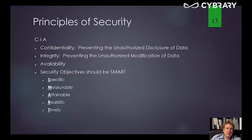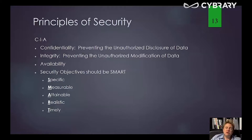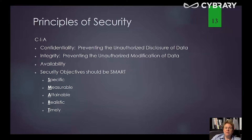When we talk about our objectives being measurable, there needs to be a way of verifying steps along the way and verifying when we've obtained those goals. So we want to decrease malware infestations as detected by our antivirus software — a decrease of 5%, something like that. So it's specific to what we're looking for and also measurable.